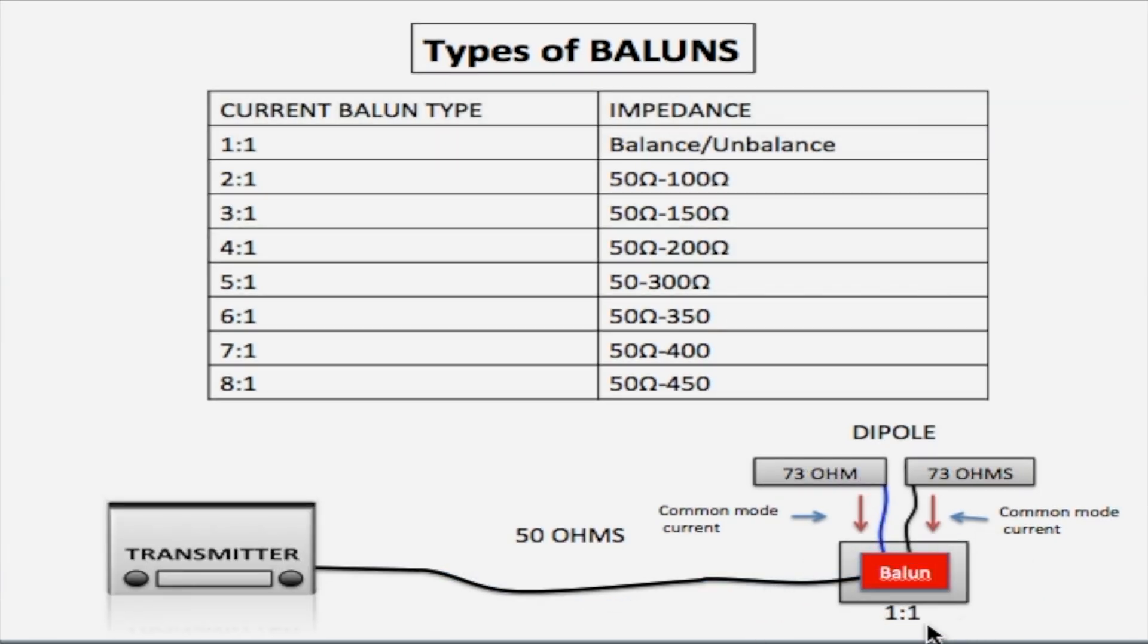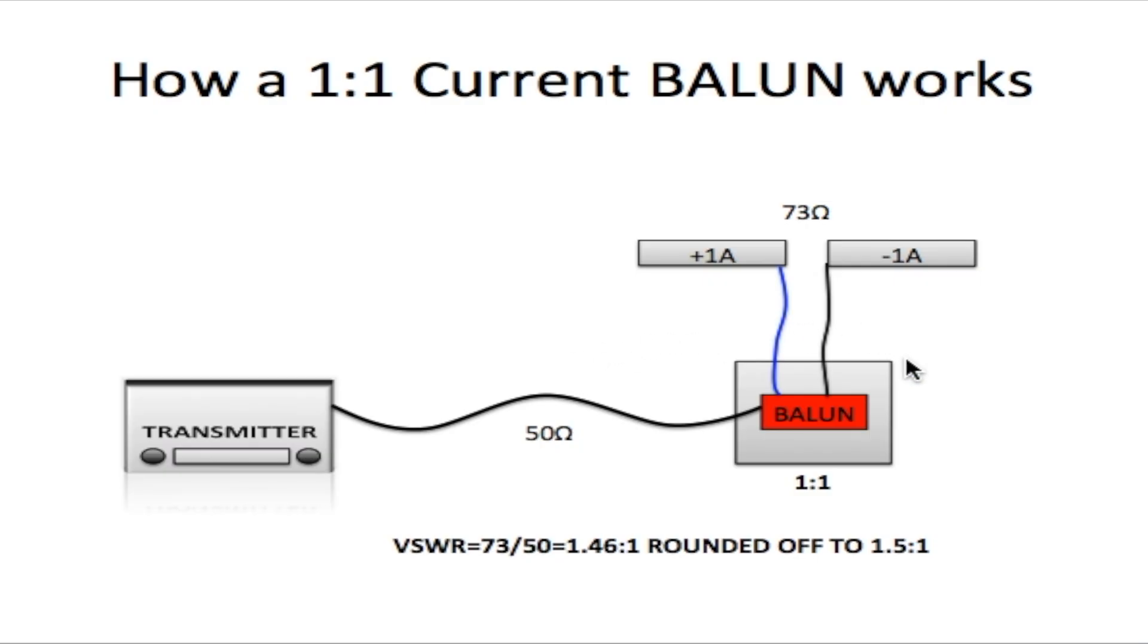Now underneath here we have a 1:1 Balun. Now the 1:1 Balun does not change impedance like the 4:1 and the other Baluns. The 1:1 just prevents common mode current from getting back to the coax. Now a 1:1 Balun is also called a choke Balun.